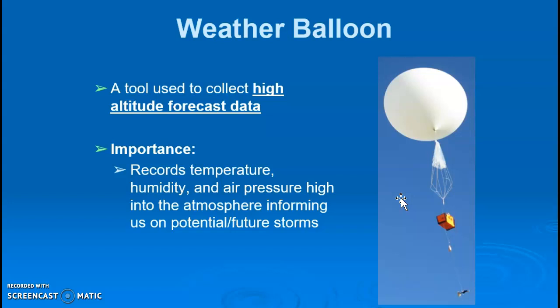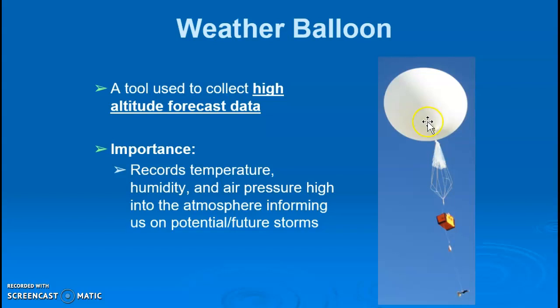A weather balloon is a tool used to collect high-altitude forecast data, floating up into the upper troposphere. It records temperature, humidity, and air pressure high in the atmosphere, informing meteorologists of potential and future storms. Because it can reach the upper troposphere, it gathers more detailed information than ground-level instruments.